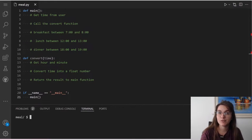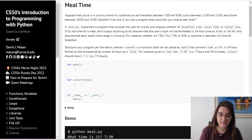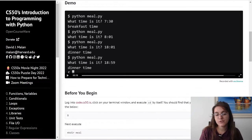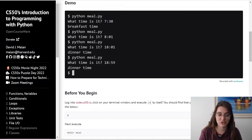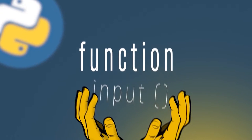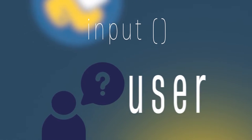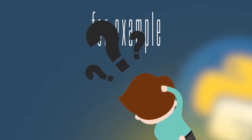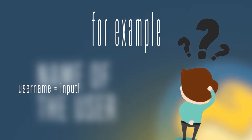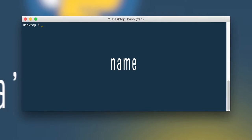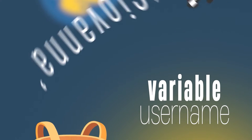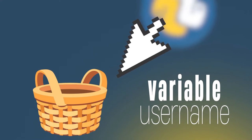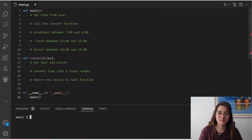We need to get the time from the user. Like we can see in the example, we're going to ask the user for its time — we can see 'what time is it' and the user is going to input a time. So how can we prompt a question? The input function allows us to ask questions to the user and store the answer in a variable. For example, if we want to ask the name of the user, we can do: username = input("What's your name?"). If the user types in Giovanna, the variable username will store Giovanna. Since the answer is stored in a variable, we can use this answer in our code.